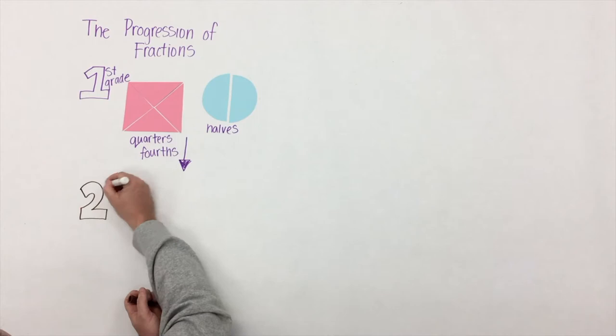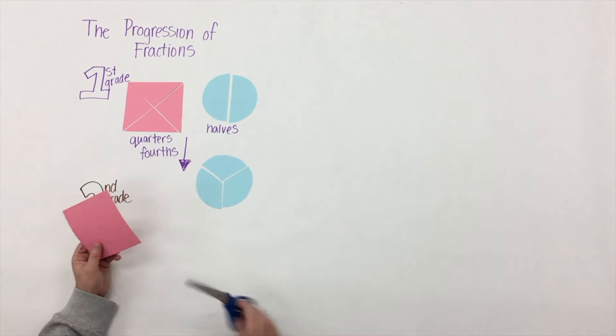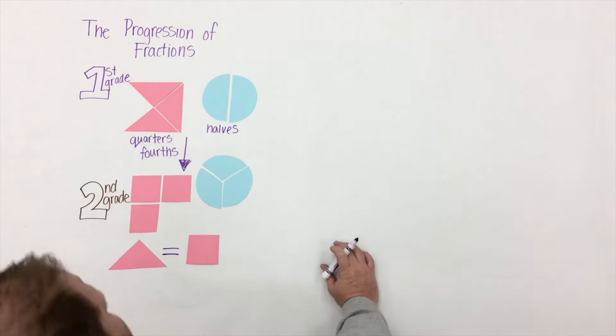In second grade, students build on their understanding of halves, quarters, and fourths, and they're introduced to the idea of thirds. When students leave second grade, a big piece of understanding they should leave with is that even though shapes can appear different, they actually can have the same size.